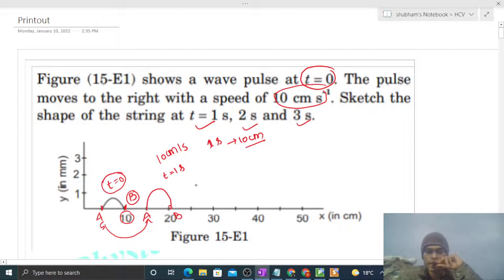At time t equals 2 seconds, what will happen? Further, end A is currently at 15 cm, so it will go 10 cm ahead, which means at 25. And the one at 20 will go to 30, meaning end B which is at 20 will go to 30. So this is the diagram at time t equals 2 seconds.